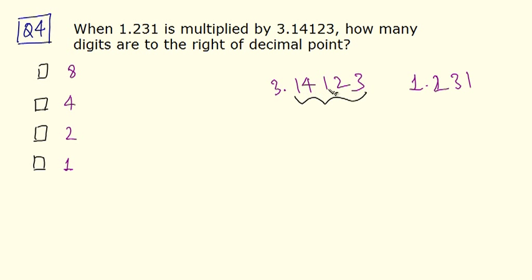Let's count the digits on the right hand side of the decimal point of the first number. So we have 1, 2, 3, 4, 5. We have 5 digits here and of the second number on the right hand side of the decimal point, we have 3 numbers, 3 digits basically. To find out how many digits are there on the right of the decimal point of the product of these two numbers, just add these two digits. So we have 5 plus 3 which is 8. So when you multiply these two numbers, you will get 8 digits on the right hand side of the decimal point and that is guaranteed. So the answer is option A.